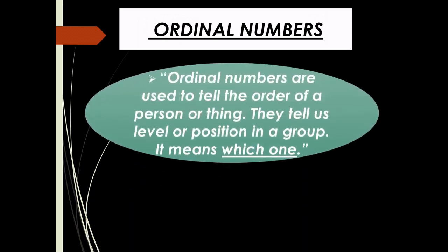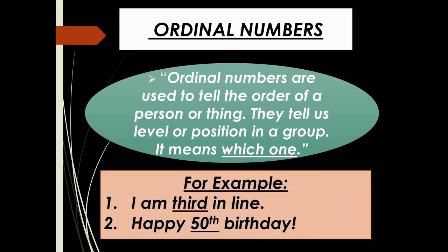Ordinal numbers are used to tell the order of a person or thing. They tell us the level or position in a group — meaning 'which one' — or we can say they show order. For example: 'I am third in line' — here 'third' is the ordinal number, showing the position. Second example: 'Happy 50th birthday' — here '50th' is the ordinal number.